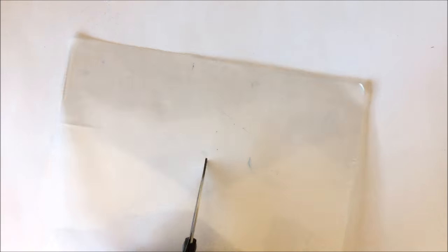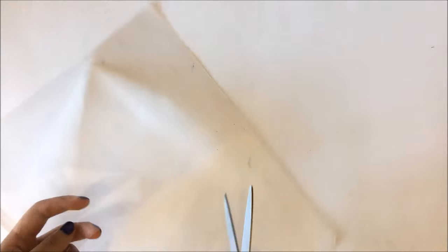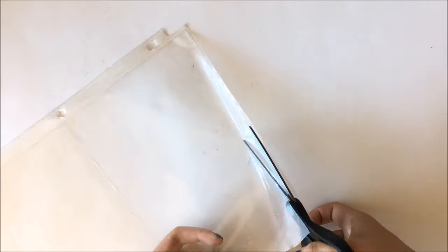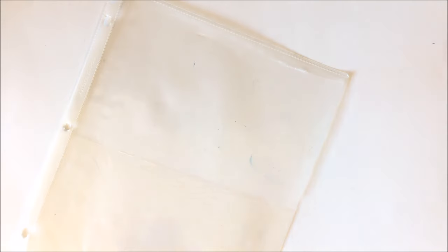You can also make pocket dividers with clear page protectors. Just cut it up like I'm doing. Two vertical cuts on the sides and a horizontal line. Then tape a little piece of paper to the side as the tabs.